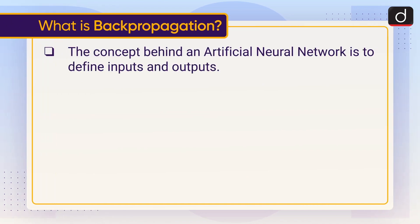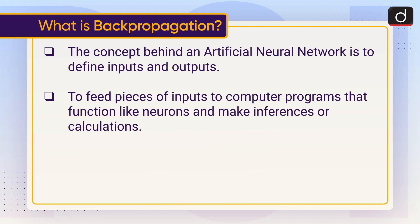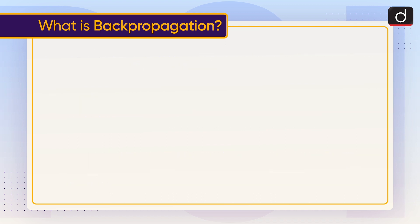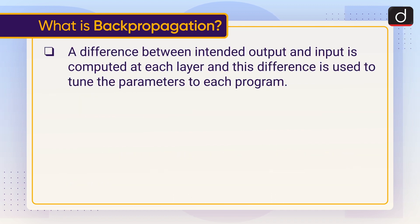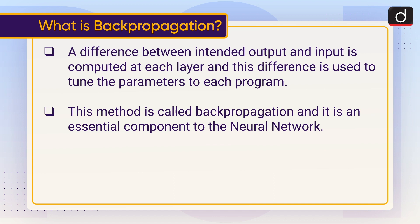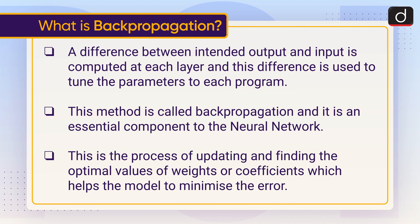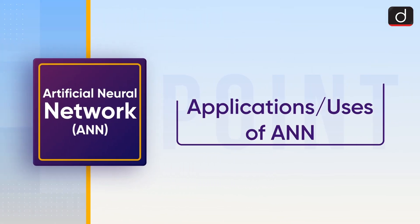The concept behind an artificial neural network is to define inputs and outputs, to feed pieces of inputs to computer programs that function like neurons, and make inferences or calculations. It then forwards those results to the second layer, that is the hidden layer, until a result is obtained. A difference between intended output and input is computed at each layer, and this difference is used to tune the parameters of each program. This method is called back propagation, and it is an essential component of the neural network. This is the process of updating and finding the optimal values of weights and coefficients that helps the model to minimize the error.